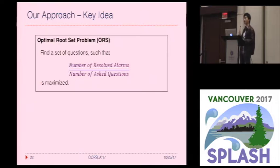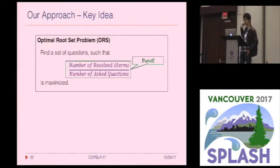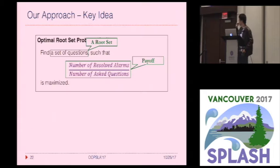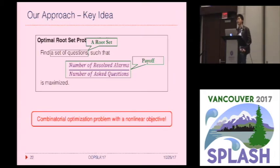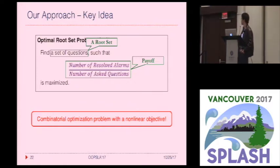The key challenge in our approach is: how do we find a set of questions that maximizes the payoff? We call this the optimal root cell problem, and a solution to it a root cell. This turns out to be a combinatorial optimization problem — combinatorial because there are both conjunctions and disjunctions in the derivation, and it has a non-linear objective. So it looks very hard.